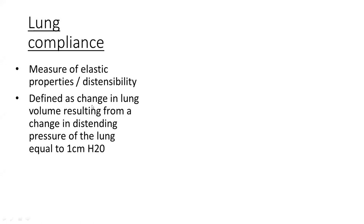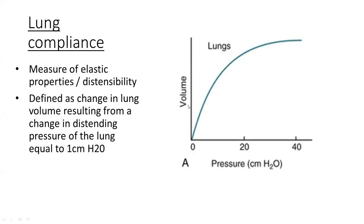The formal definition is: a change in lung volume resulting from a change in the distending pressure of the lung, equivalent to 1 cm of water. This is a graph showing the transpulmonary pressure against the volume of the lungs. It is a curvilinear graph showing that as pressure increases initially, the volume of the lung increases due to good compliance, but as the volume reaches a certain point — usually beyond the FRC — the lung volume remains static even if pressure increases.